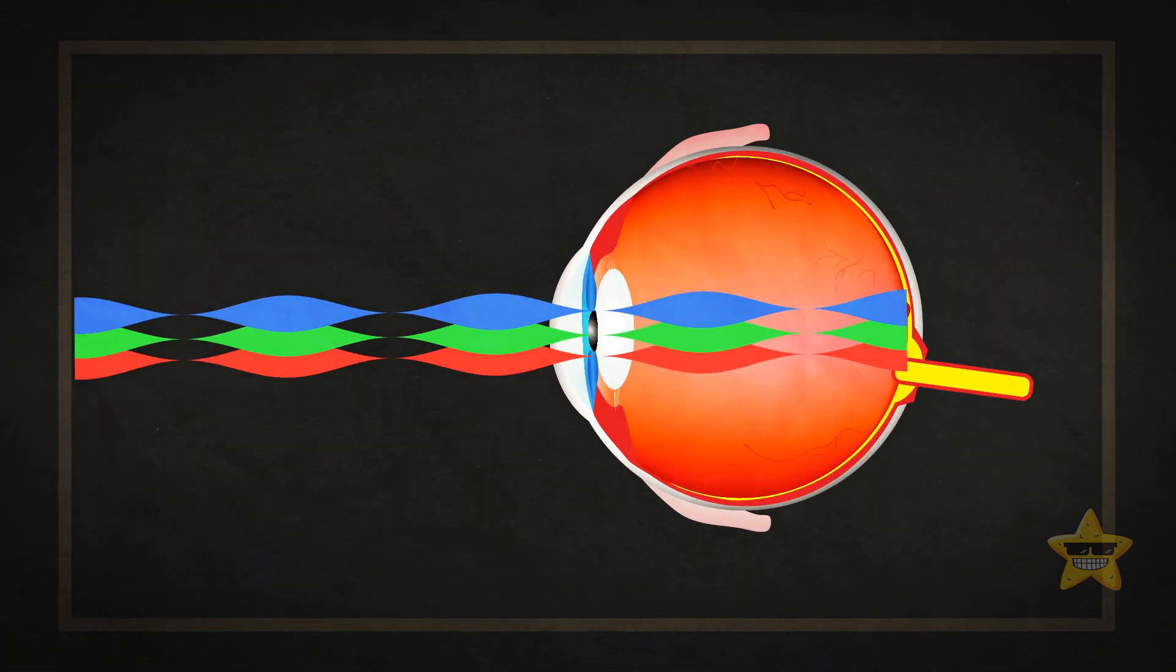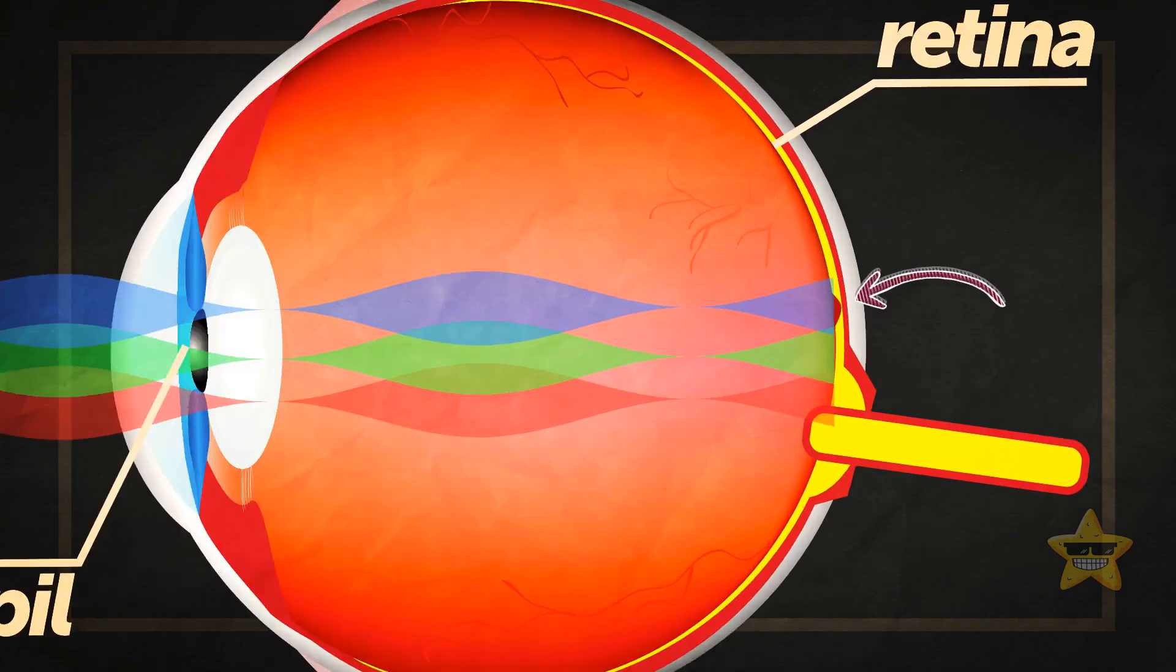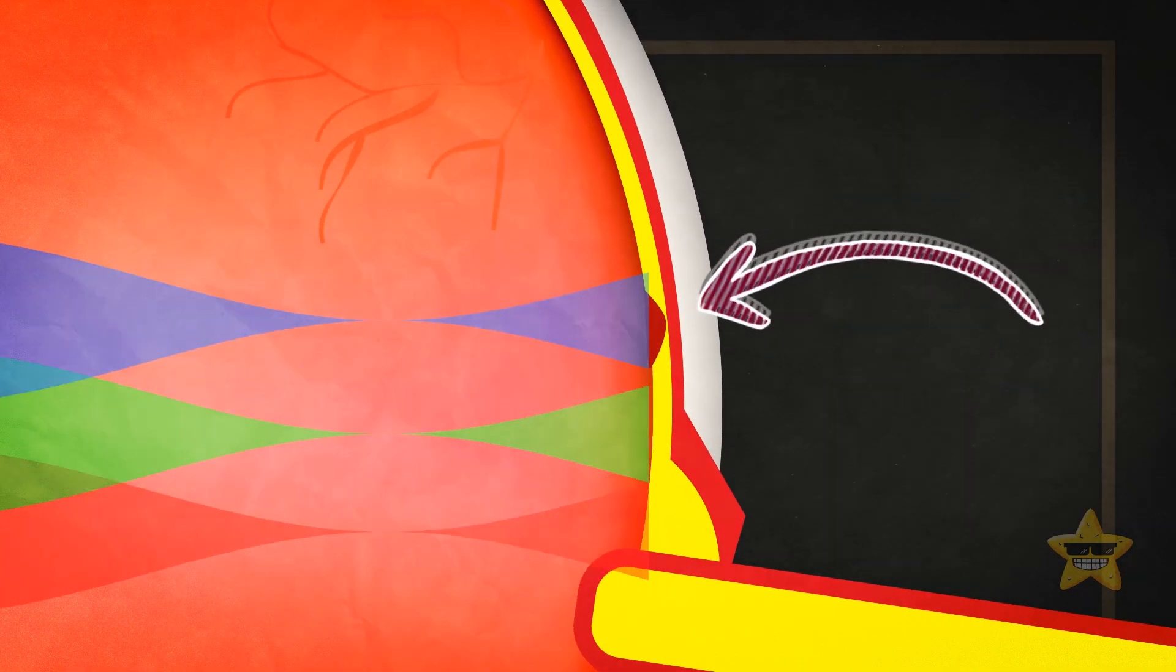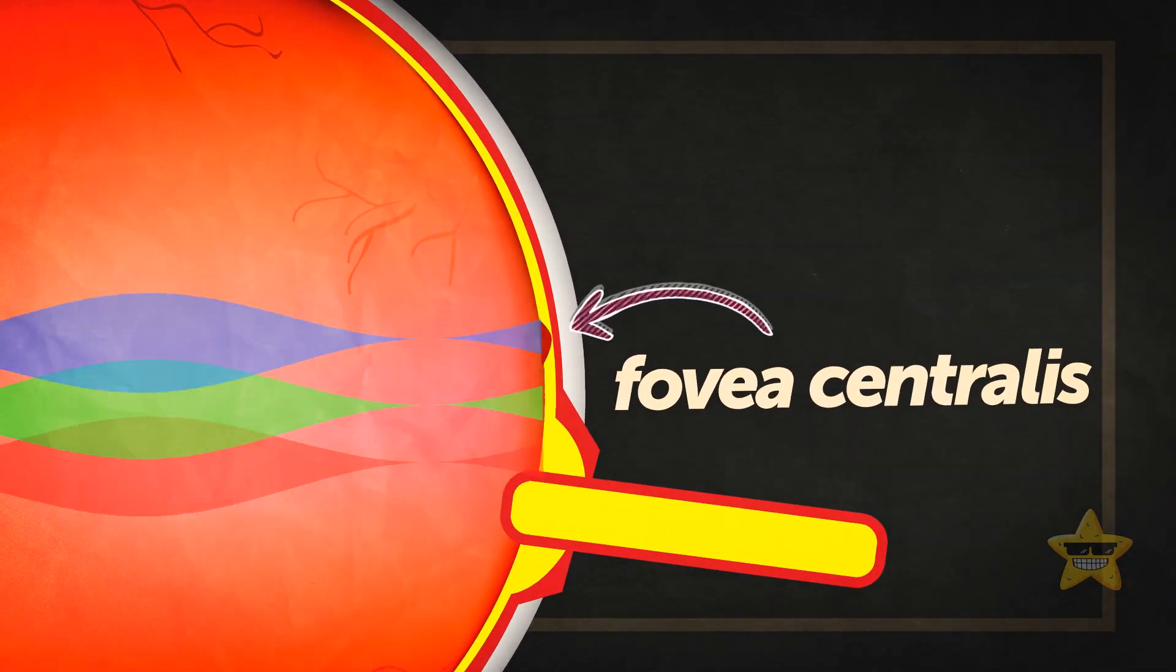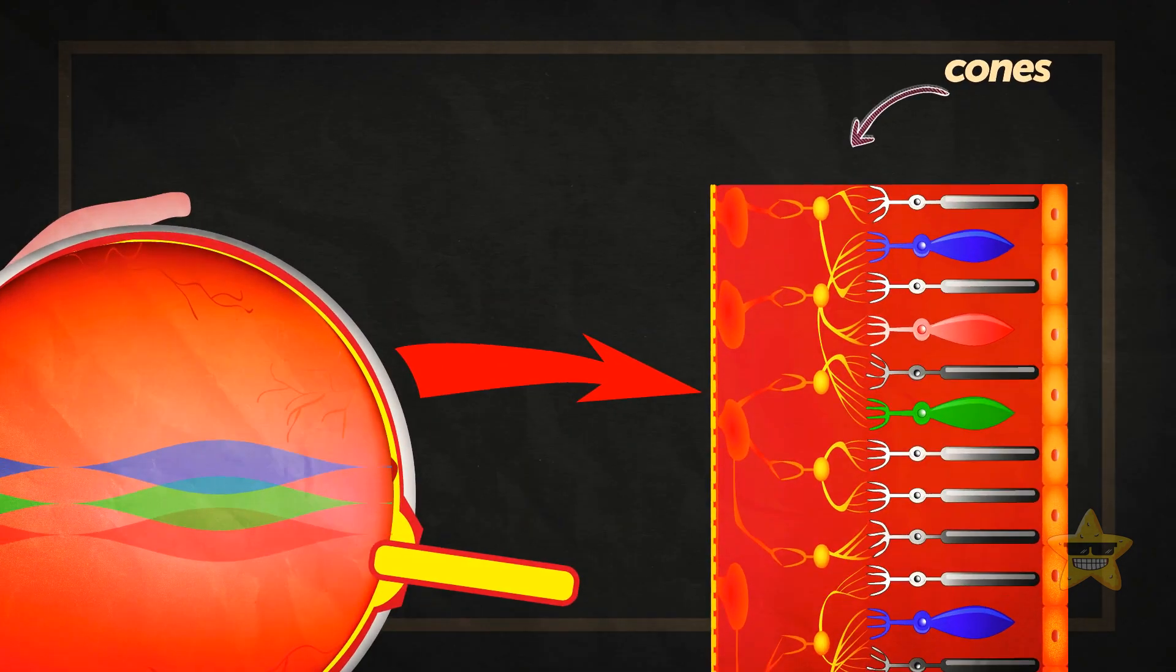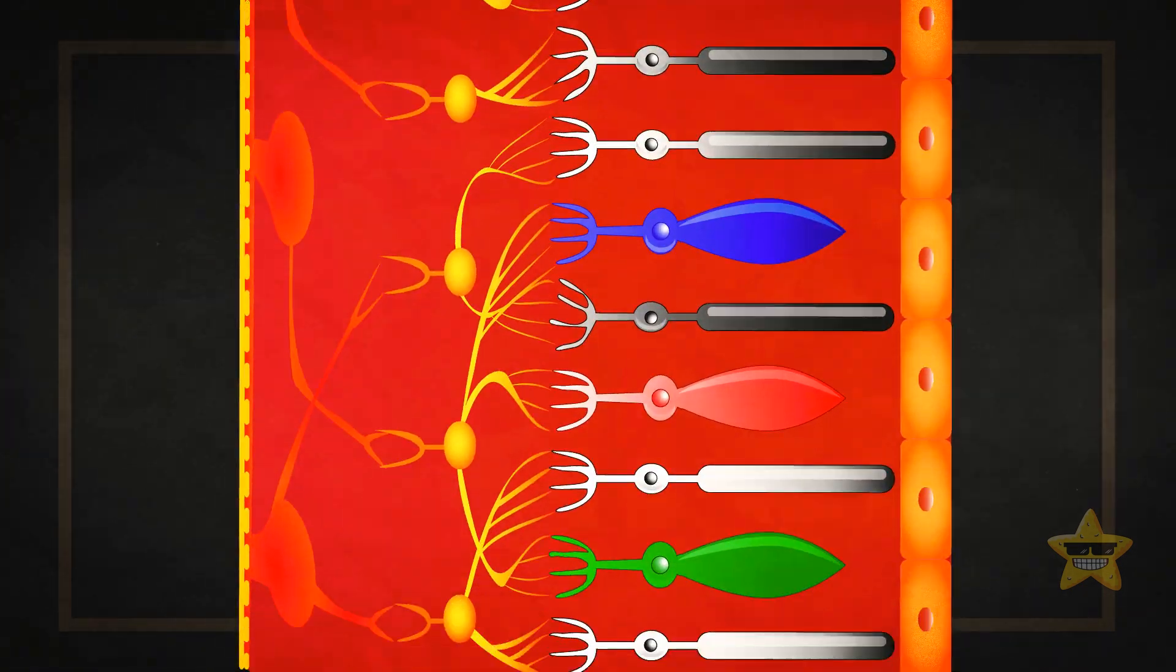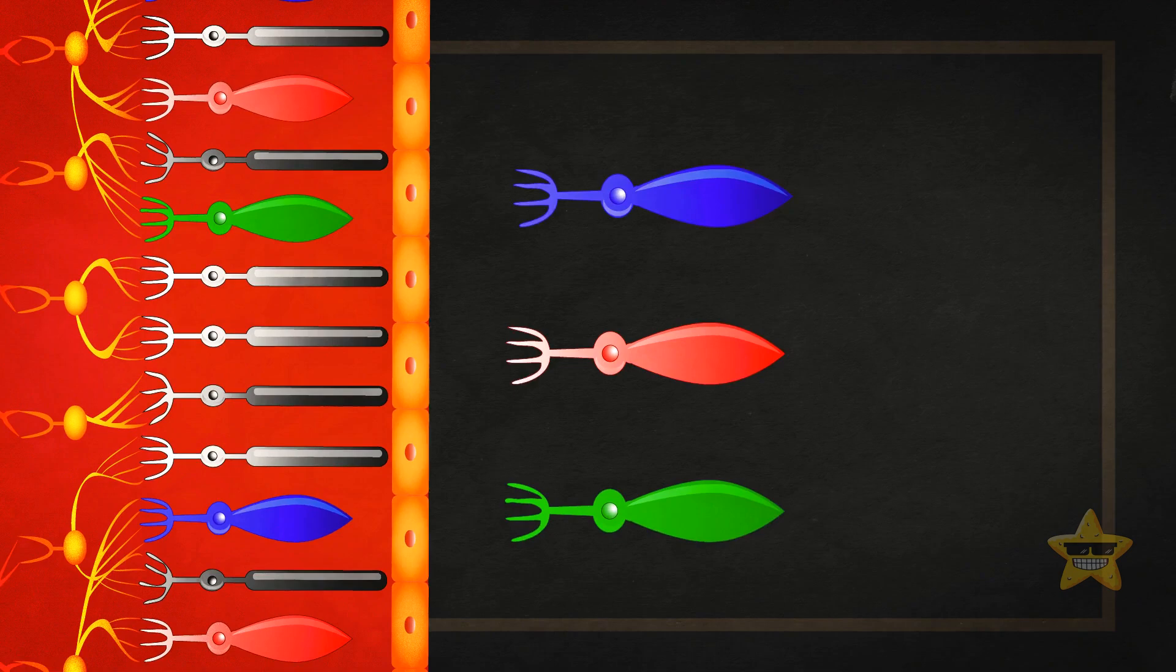Then, these waves get into our eyes. Through the pupil and retina, they reach a tiny point on the back of the eyeball. This little spot, called the fovea centralis, accommodates about 6 or 7 million cones. These cones are photoreceptors, tiny retinal cells. And we have three types of them.